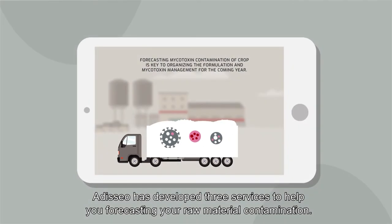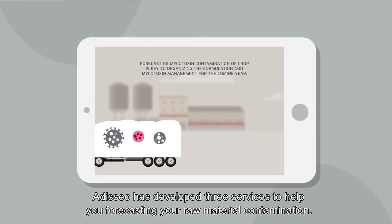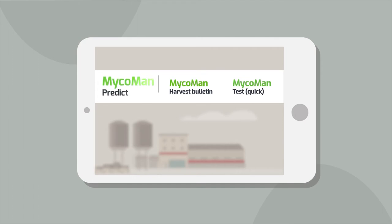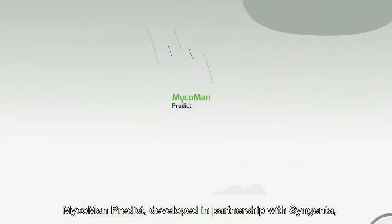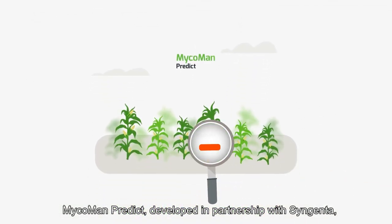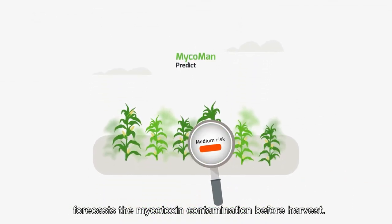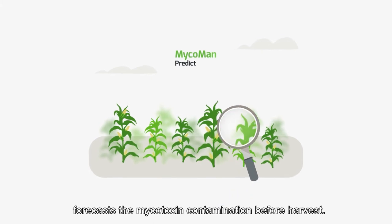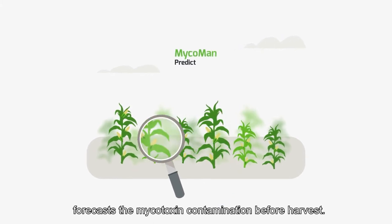Addisio has developed three services to help you forecast your raw material contamination. Mycoman Predict, developed in partnership with Syngenta, forecasts the mycotoxin contamination before harvest.